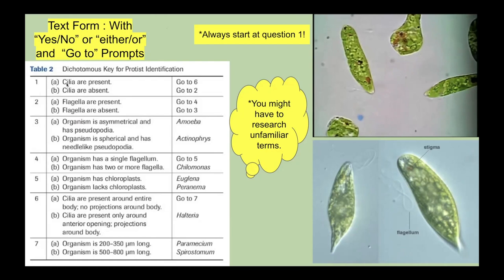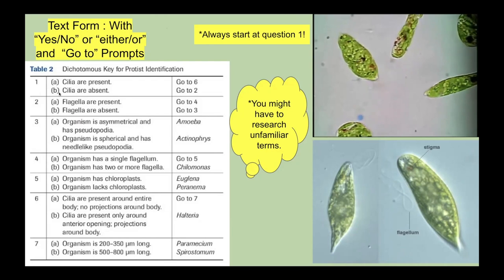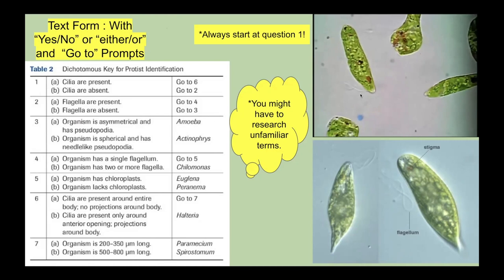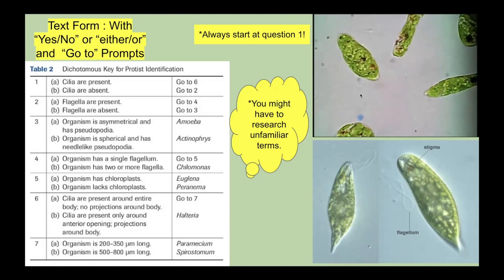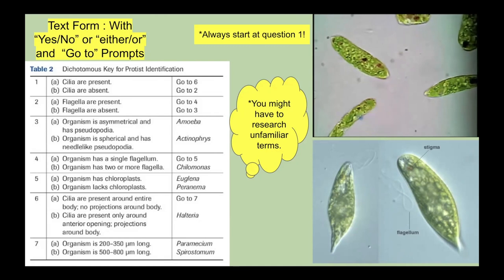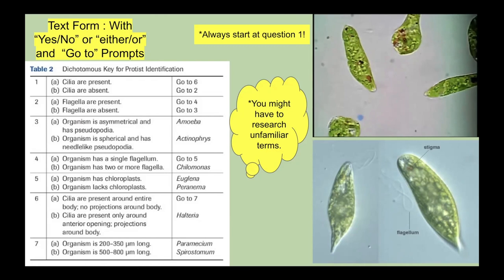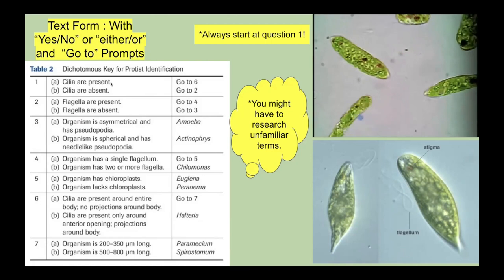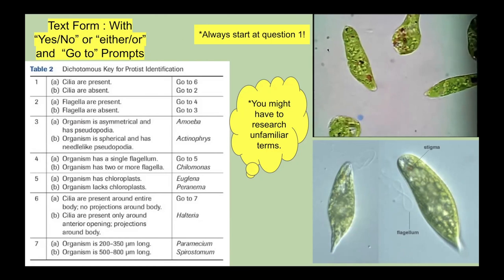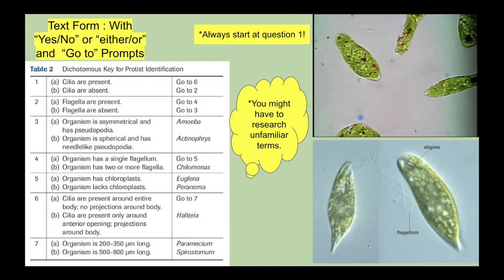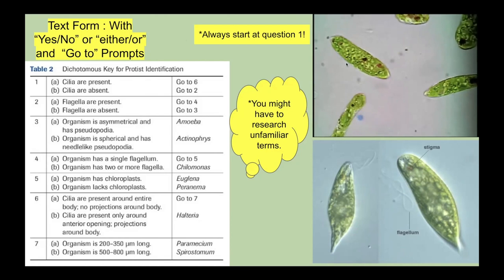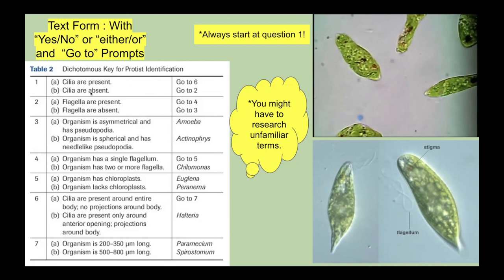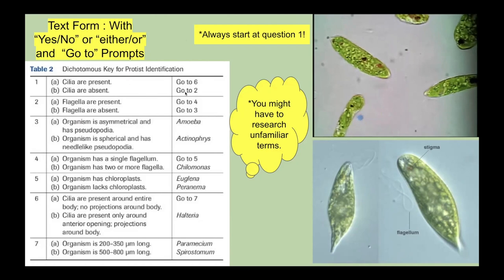Question one: A says cilia are present, B says cilia are absent. A cilia is a short, microscopic hair-like structure. Looking at our organism, it doesn't have cilia, so we choose 'cilia are absent' and follow to question two. Question two asks: are flagella present or absent? I can clearly see a flagella — a long thread-like appendage that moves like a wave. This organism has a flagella, so we go to question four.